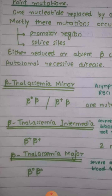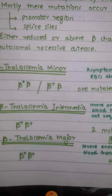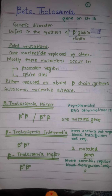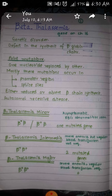Beta thalassemia major is denoted by beta-zero/beta-zero, meaning there is no formation of any beta globin chain. Such a person will suffer from severe anemia, and regular blood transfusions will be required for the survival of the patient.